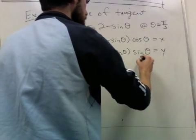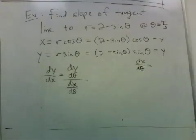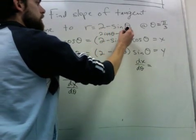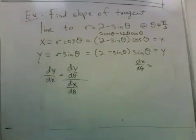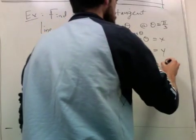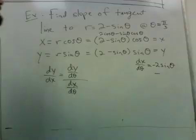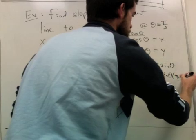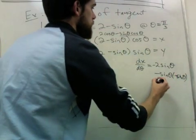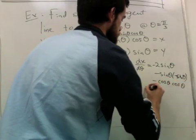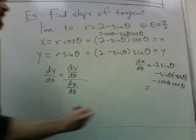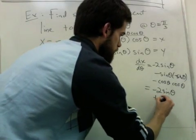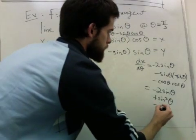Let's work over here separately. dx/dθ is going to be... here I have 2 cosine theta minus sine theta cosine theta. So I'll have negative 2 sine theta minus, then using the product rule, sine theta times negative sine theta minus cosine theta times cosine theta. This simplifies to negative 2 sine theta plus sine squared theta minus cosine squared theta.